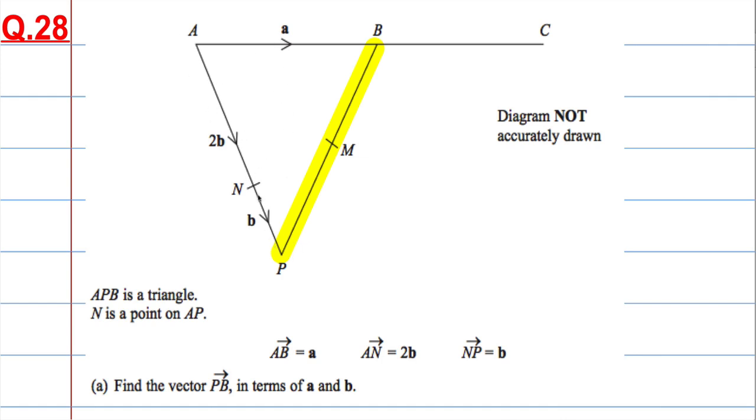Now, the information I have has to do with this vector here, AP, and AB. So if we consider, if I was to travel, to get from P to B, one way of doing it is to go along this vector, and then go along this vector.